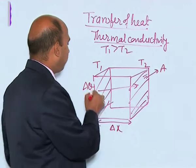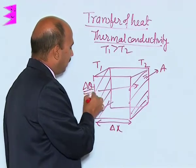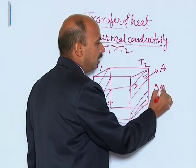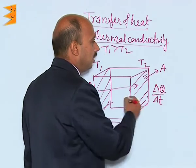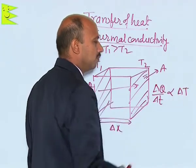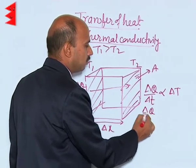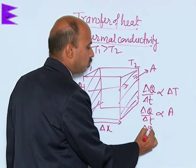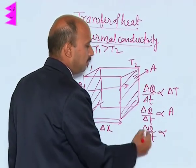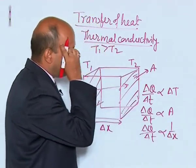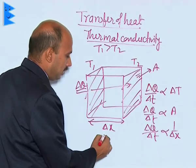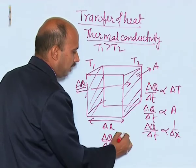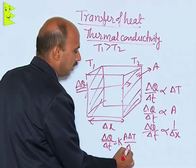The rate of flow of heat — whatever heat is being transferred from one end to the other — can be written as delta Q upon delta t. This is directly proportional to the change in temperature, directly proportional to area, and inversely proportional to the distance between the two faces. Combining these, delta Q upon delta t equals k times A times delta T divided by delta x.